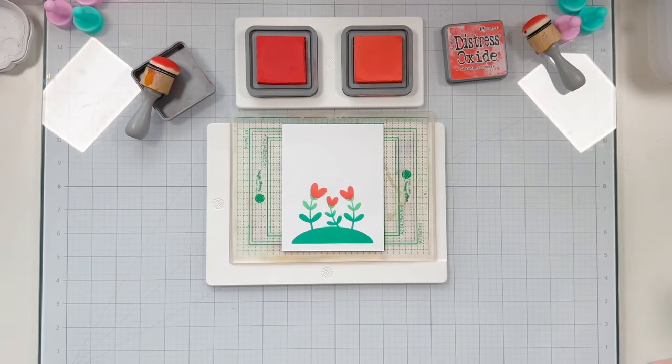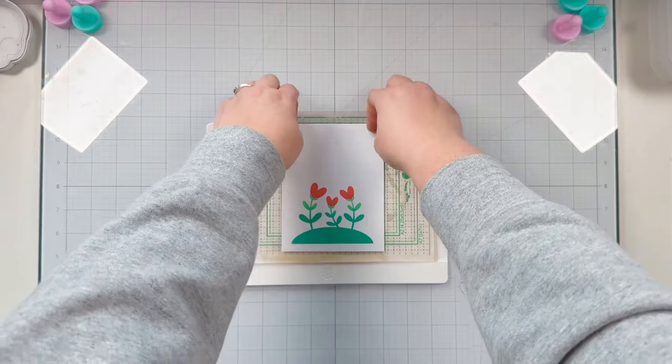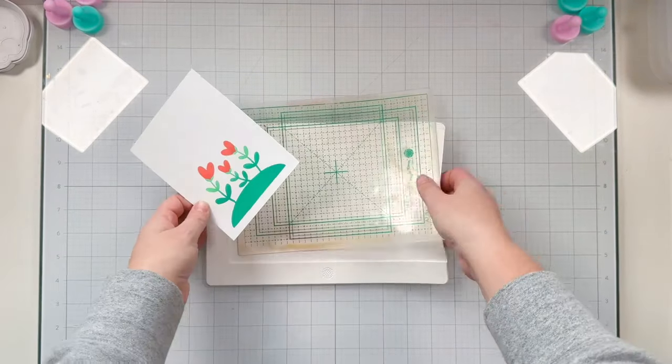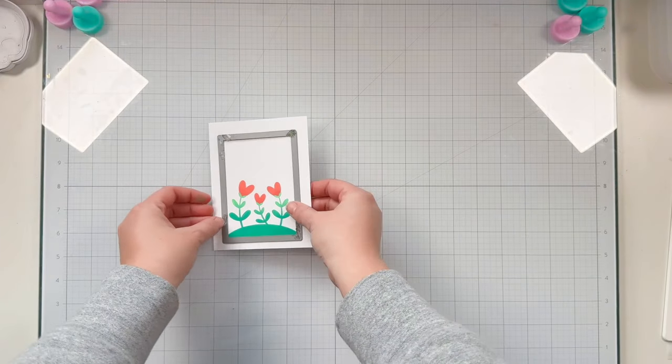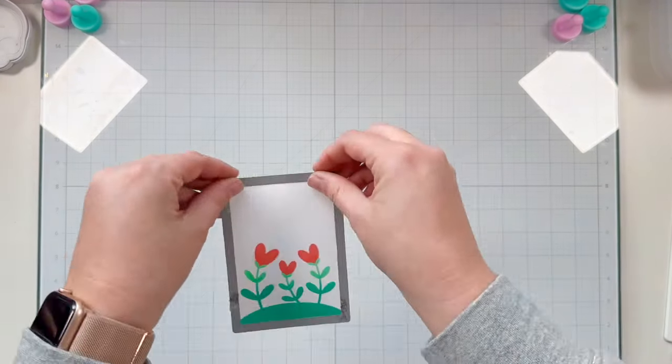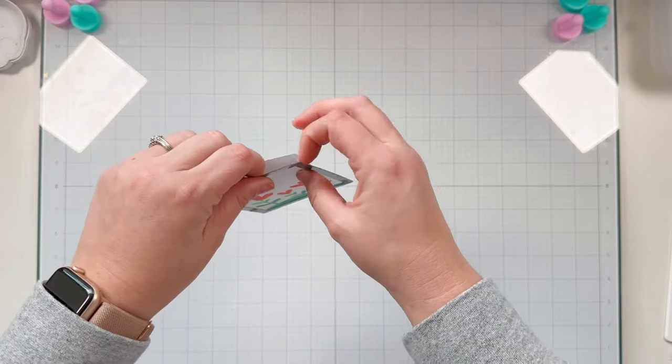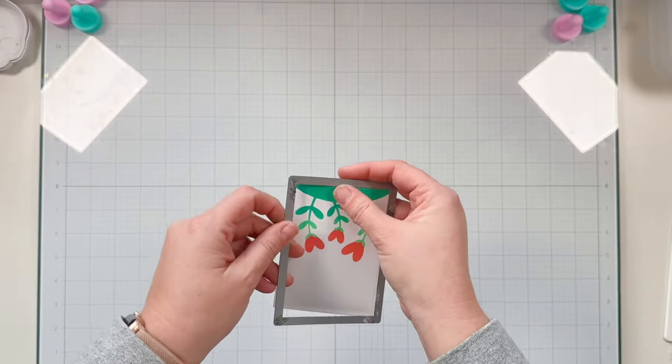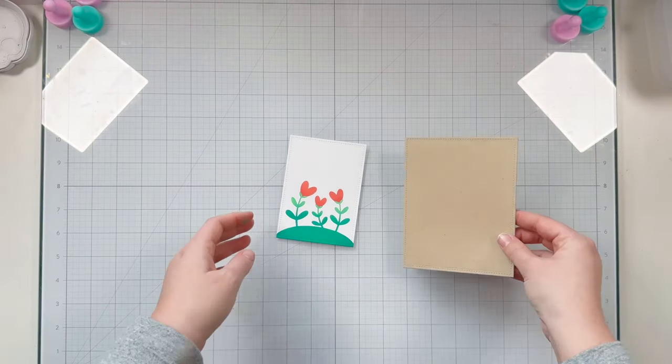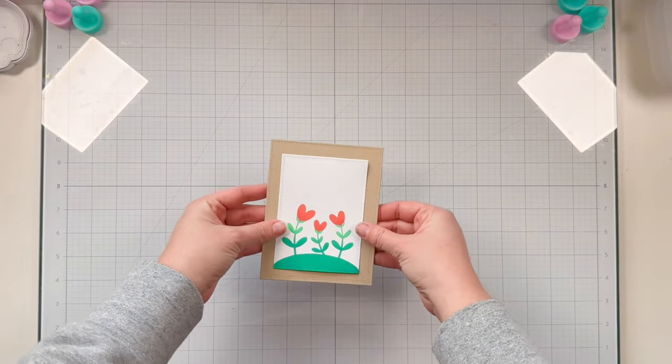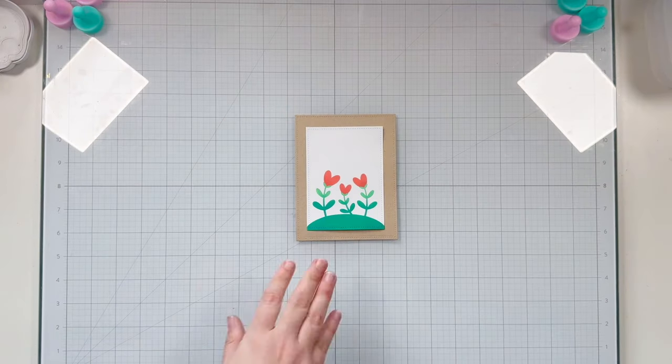You can see this cute little hill with our adorable heart flowers that were so easy to stencil using the Lawn Fawn Heart Garden Stencil. I'm using the second largest of the large stitched rectangle stackable Lawn Fawn dies to cut out that background and then the largest from that set to cut a piece of craft cardstock.